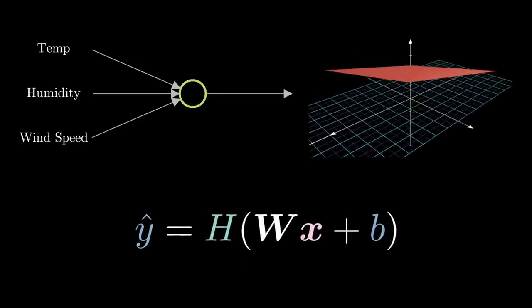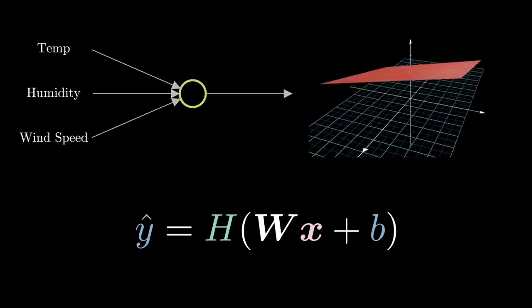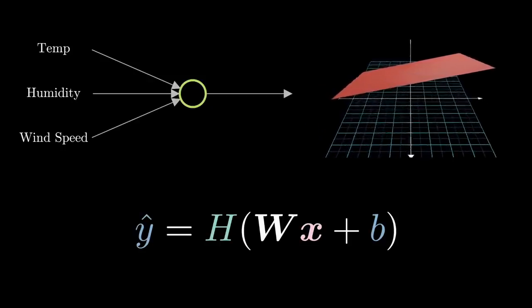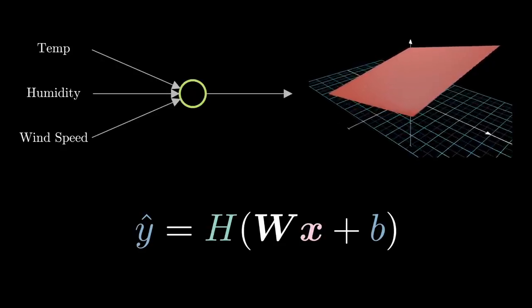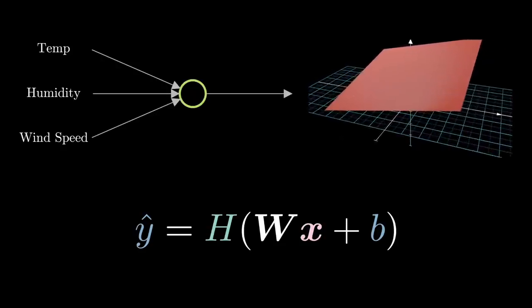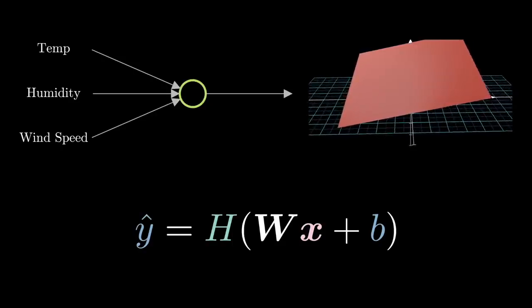In general, an artificial neuron takes in some input vector x, multiplies it by a weight matrix and adds a bias to it and passes it through a function called the activation function. So in this case the activation function is the heavyside step function.